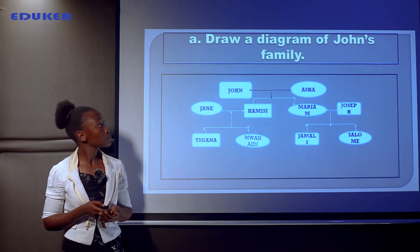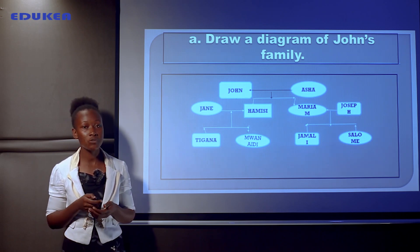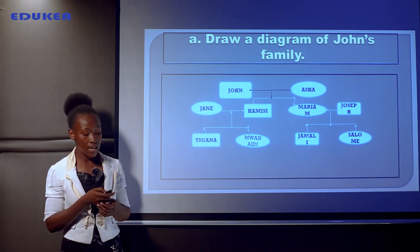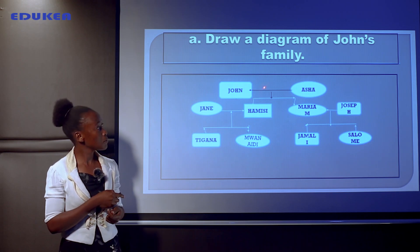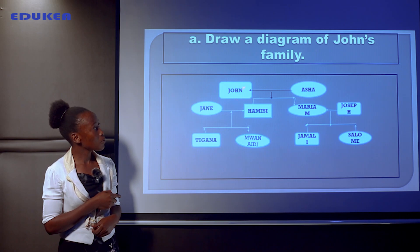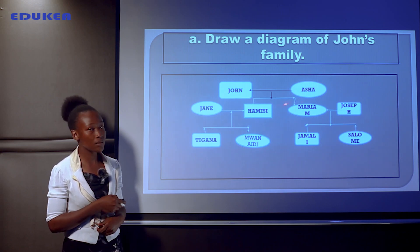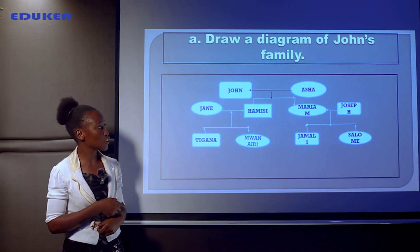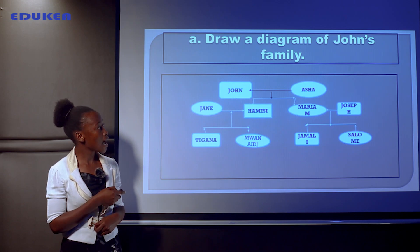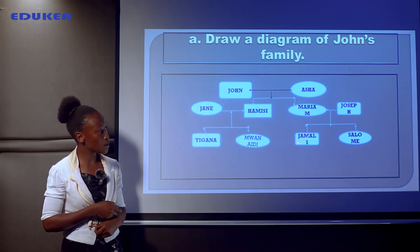Starting with question A: draw a diagram of John's family. Here we are going to draw a family tree — the branches as we explained previously. John married Asha and they got two children, Hamisi and Mariam. In our tree, boxes represent males and females respectively. Hamisi married Jane, and Mariam married Joseph. Hamisi and Jane got two children, Tigana and Mwanaidi. Mariam and Joseph also had two children, Jamali and Salome.